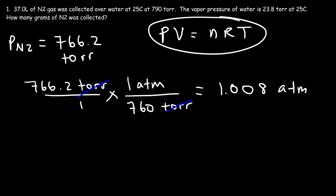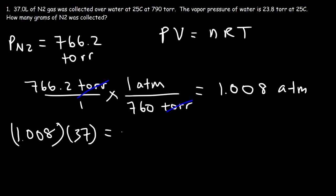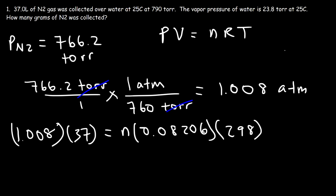Now let's use PV = nRT. We replace P with 1.008 ATM and V is 37 liters. Our goal is to calculate n. R is 0.08206, and the temperature is 25°C plus 273, which is 298 Kelvin — don't forget to always use Kelvin in this equation. So n = (1.008 × 37) / (0.08206 × 298).